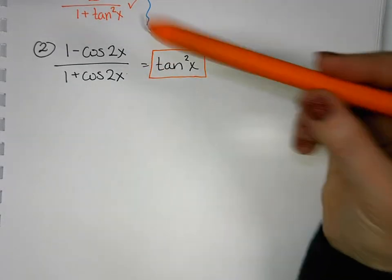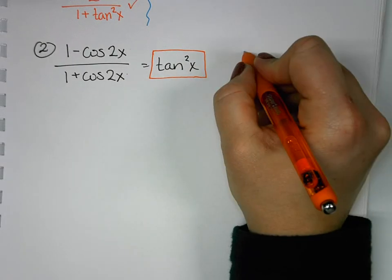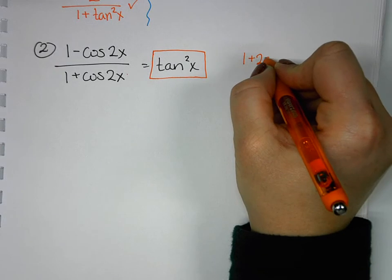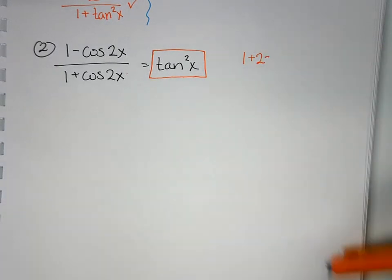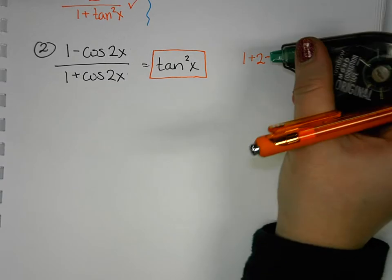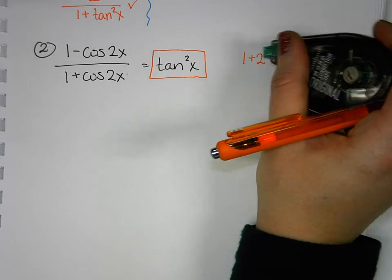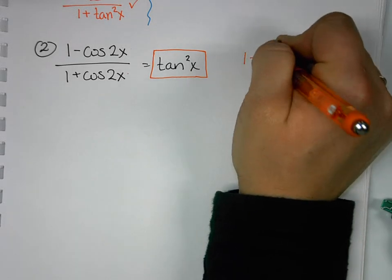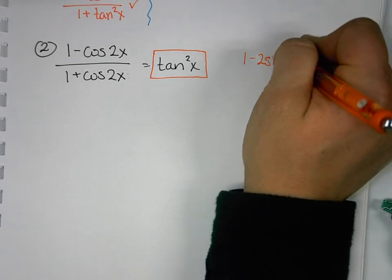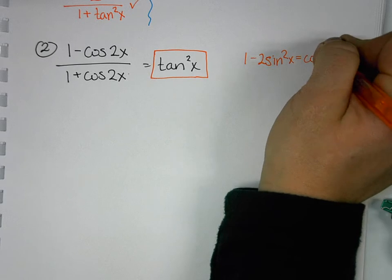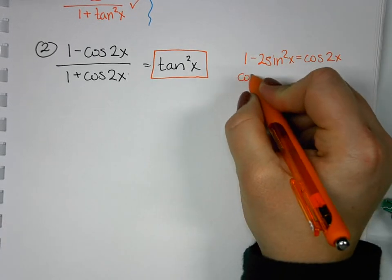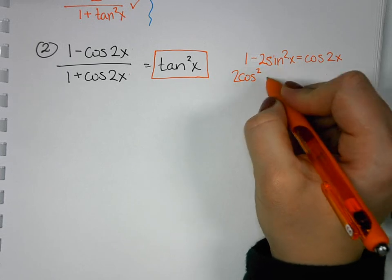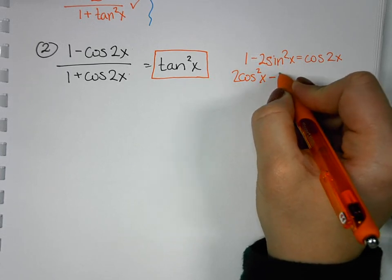I'm going to think about using the 1 minus 2sin²x on top and the 2cos²x - 1 on the bottom.